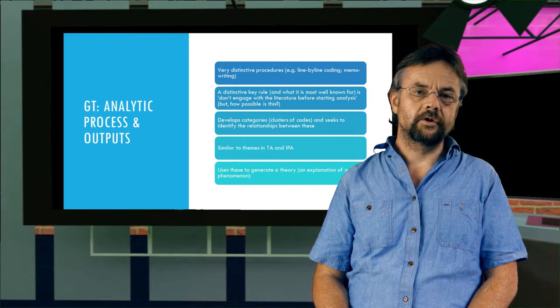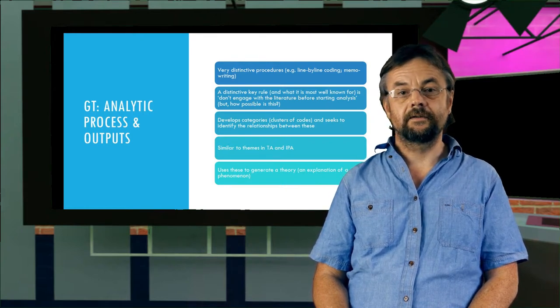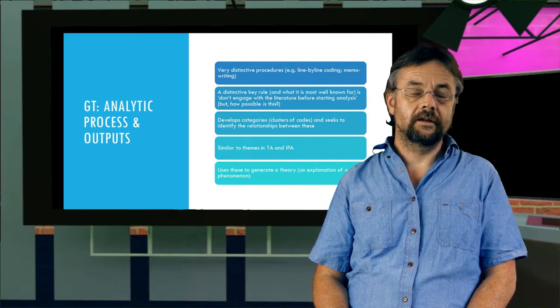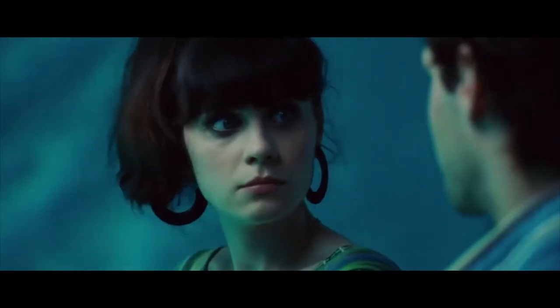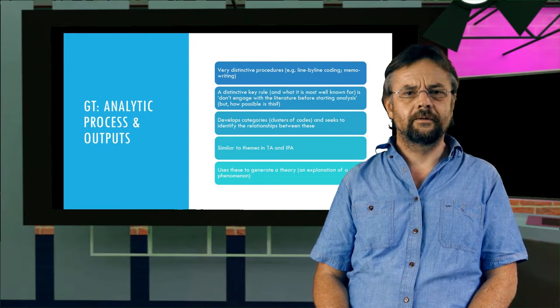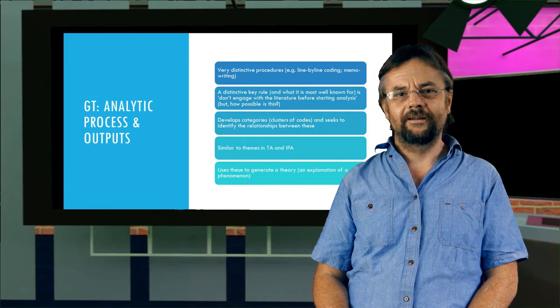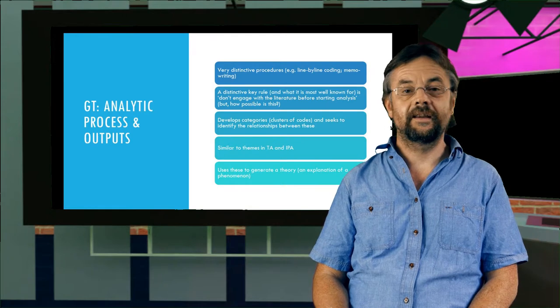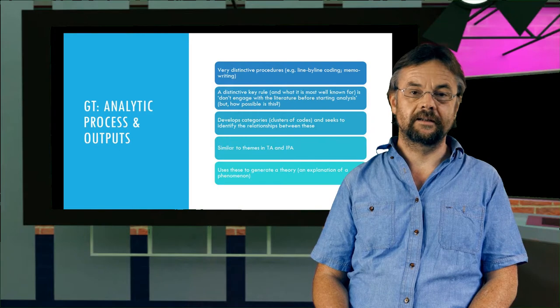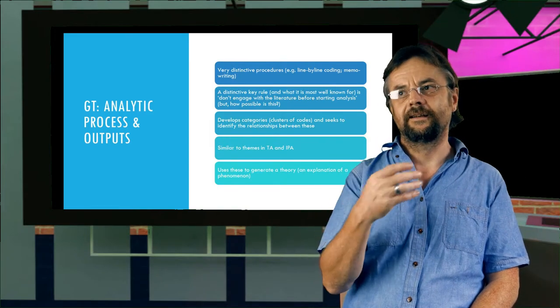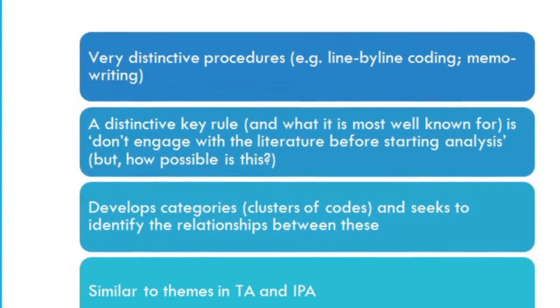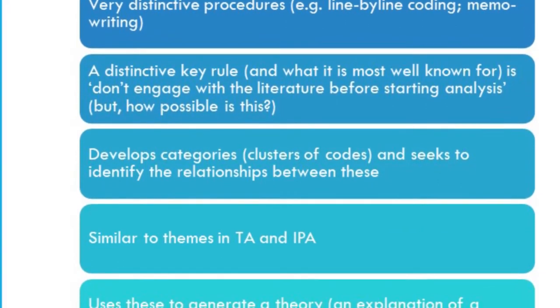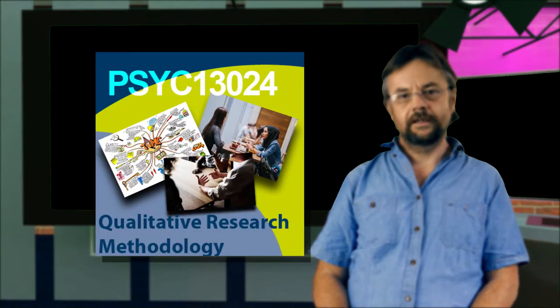But the general point really is that you should avoid going into interviews with a head full of pre-existing theories. If you know too much about what you are researching, you can end up inadvertently testing out your pre-existing theories. Those theories filter what you hear from the participant. Now grounded theory is all about developing categories, or what is also called clusters of codes, and then you identify the relationships between those categories or clusters.